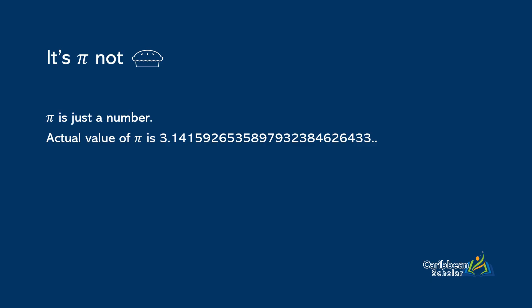But we are only interested in the first three numbers. Whenever we use pi in a calculation at the CSEC level, we use it as either 22 over 7 or 3.14.